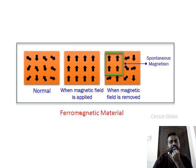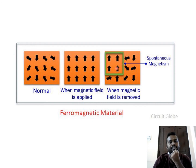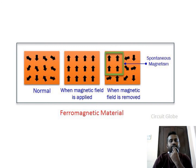In a ferromagnetic material, atoms are randomly placed. When a field is applied, they align themselves in a particular direction. When it is removed, not all atoms return to random positions — some remain aligned, resulting in residual magnetism or spontaneous magnetism that persists even after removal of the external field. This is the hysteresis effect.